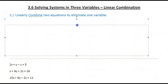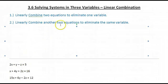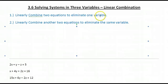Step 2: in Step 1, we've used two equations and linearly combined them. Now we're going to linearly combine another two equations to eliminate the same variable. In Step 1, it didn't matter which variable we eliminated. In Step 2, we need to make sure that we eliminate the same variable.